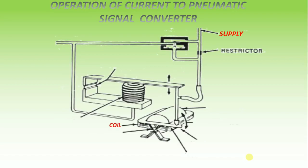A coil positioned in the field of a permanent magnet reacts to the current by producing a tangential thrust proportional to the input signal flowing through it.